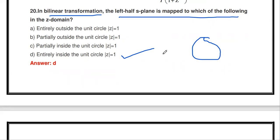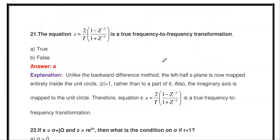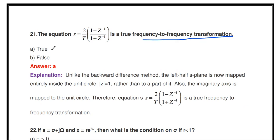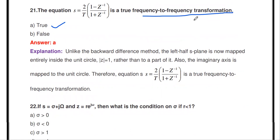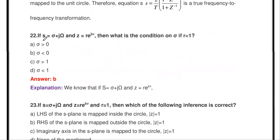The next question: the equation s = (2/T) × (1 − z^(−1)) / (1 + z^(−1)) is a true frequency-to-frequency transformation — true or false? It is true. Unlike the backward difference method, the left half pole is mapped inside the unit circle, and the imaginary axis value is mapped on the unit circle. Substituting this relation confirms it is a true frequency-to-frequency transformation technique.